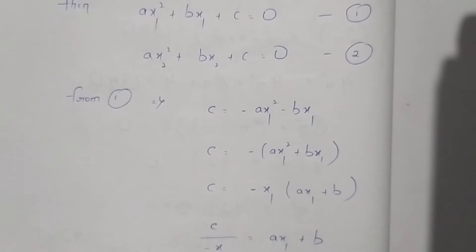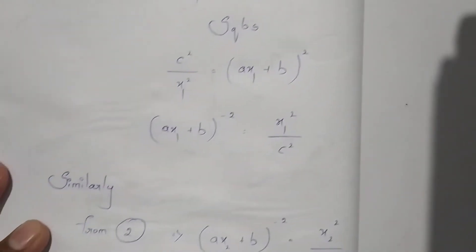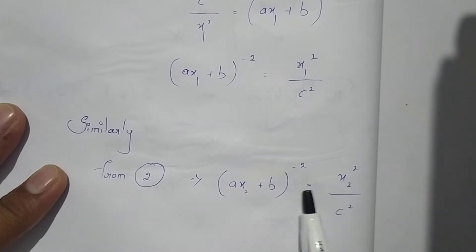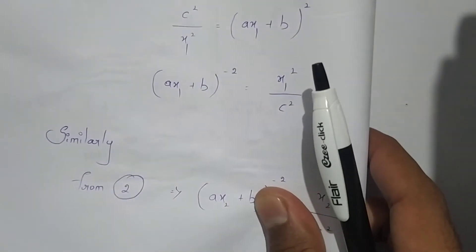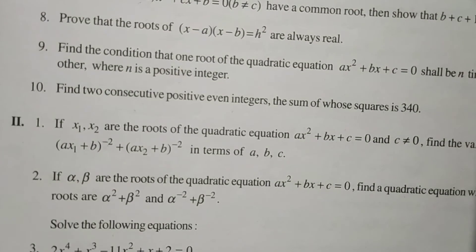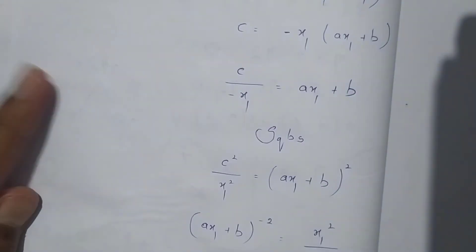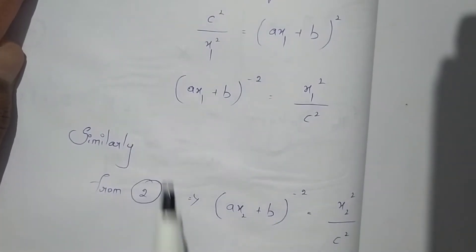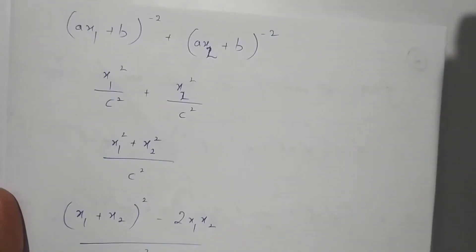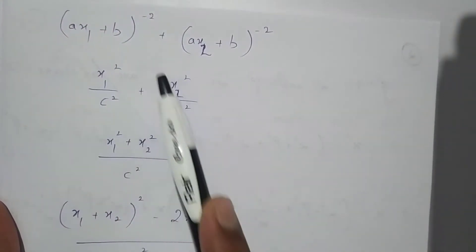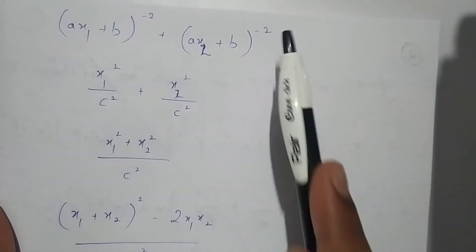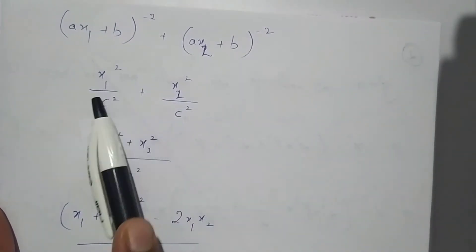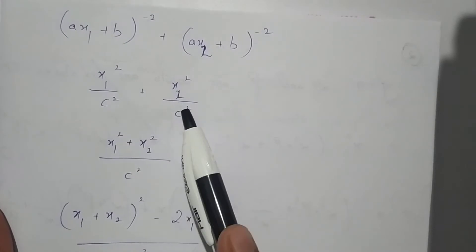Similarly, applying the same process to equation 2, we get (ax₂ + b)⁻² = x₂² / c². Now, to find the sum, we add the two values: (ax₁ + b)⁻² + (ax₂ + b)⁻² = x₁² / c² + x₂² / c².